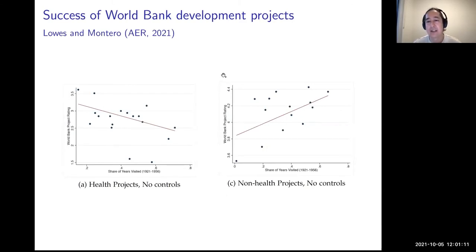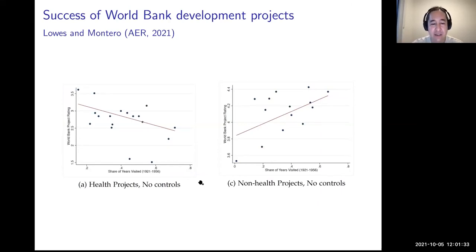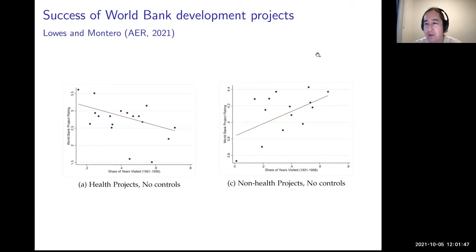Furthermore, the World Bank rates its health projects on a one-to-five scale, and health projects in places visited heavily by colonial medical campaigns are less successful. But for other projects — road building, school construction — you don't see that negative relationship; in fact, you see a positive relationship. This feeds into the efficacy of foreign aid and everything the World Bank and other organizations are trying to do.